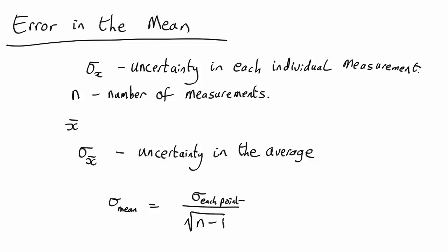So let's say, for example, you made 10 measurements, so n equals 10. n minus 1 is 9, root n minus 1 is 3. So that means the error in the mean would be 3 times less than the error in each individual point.